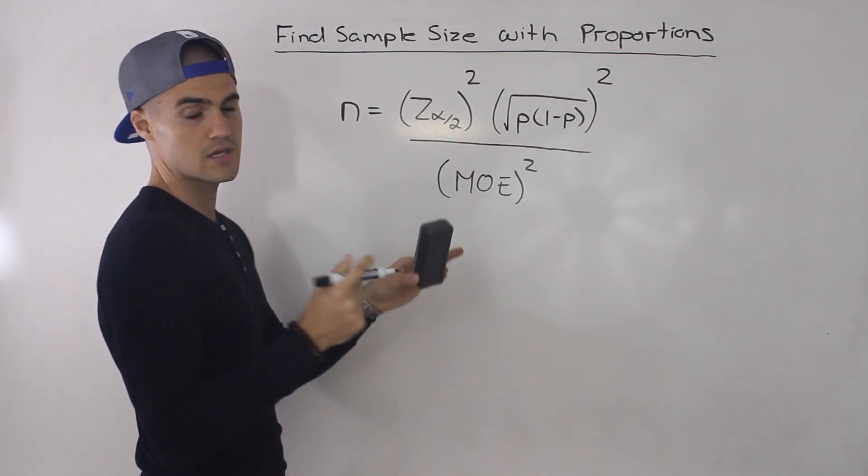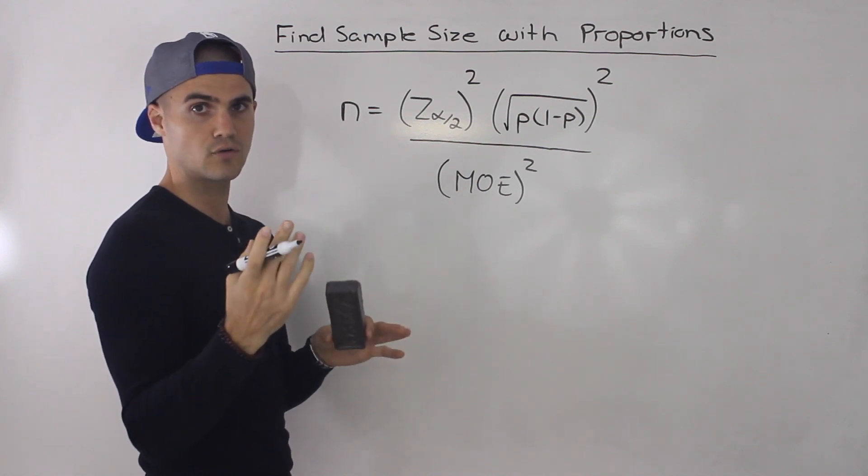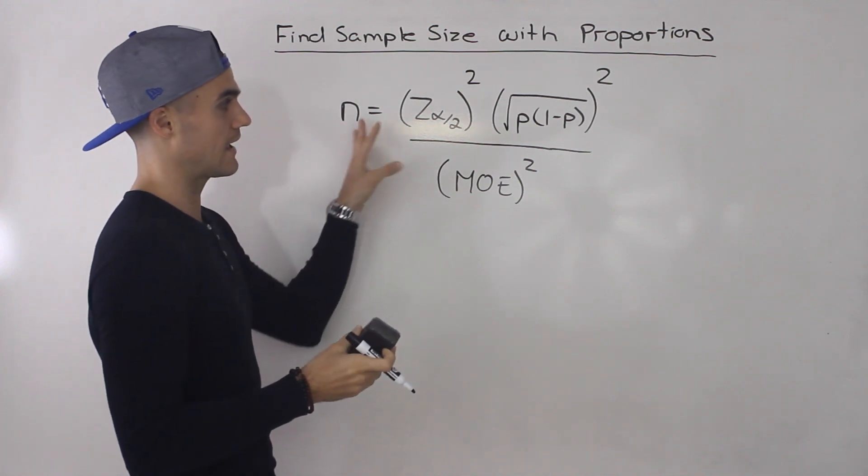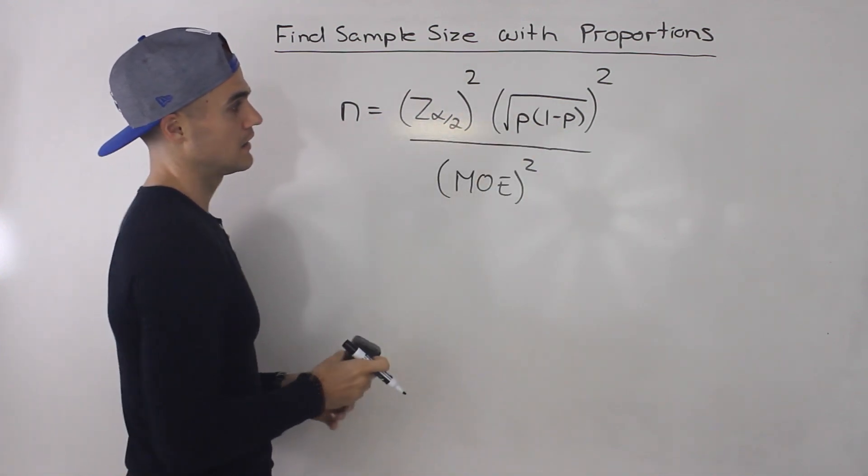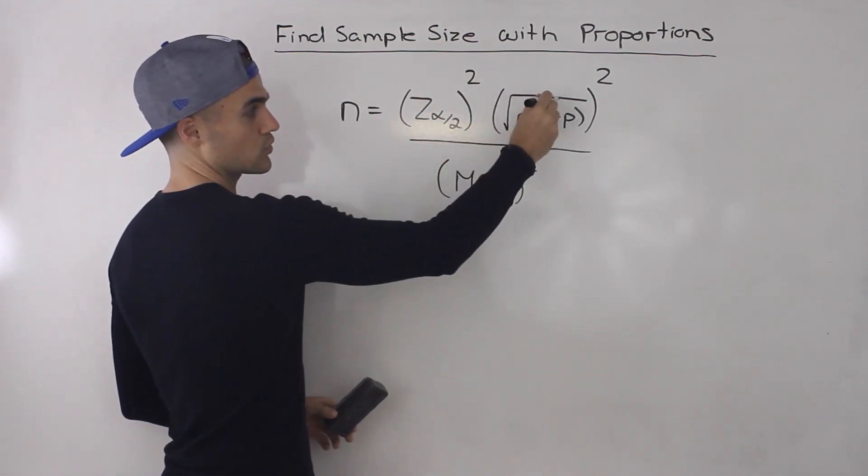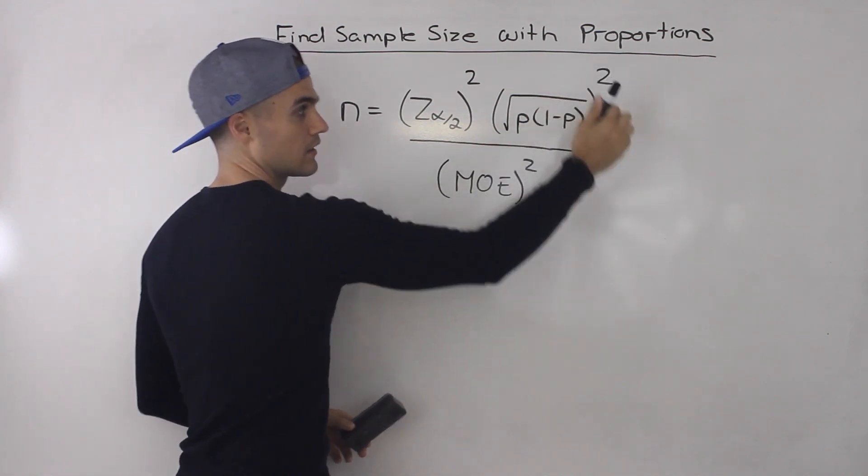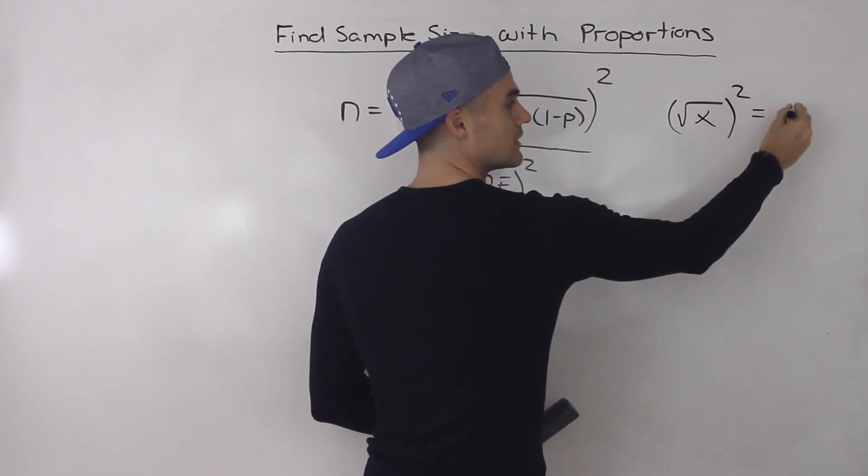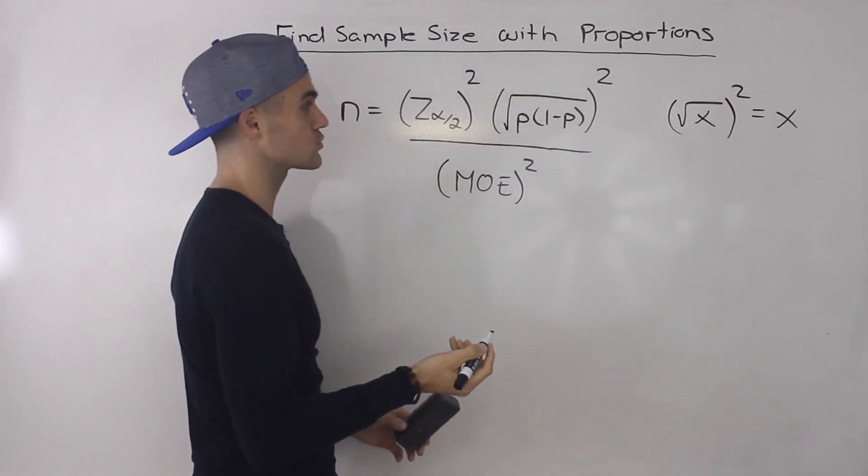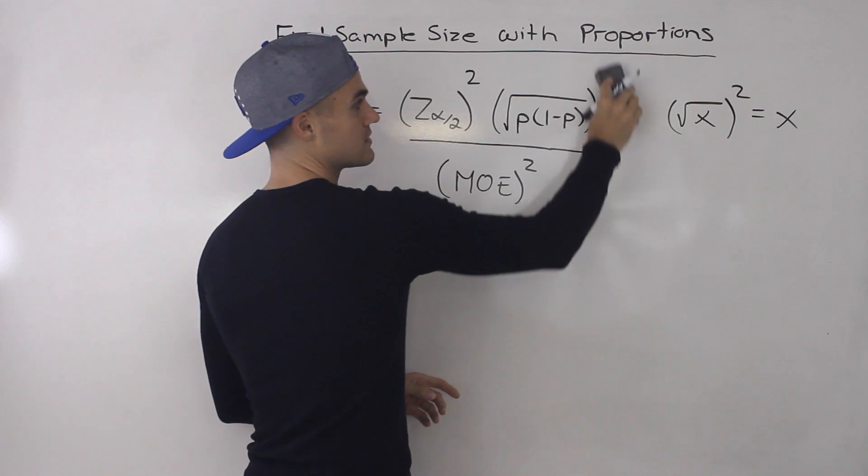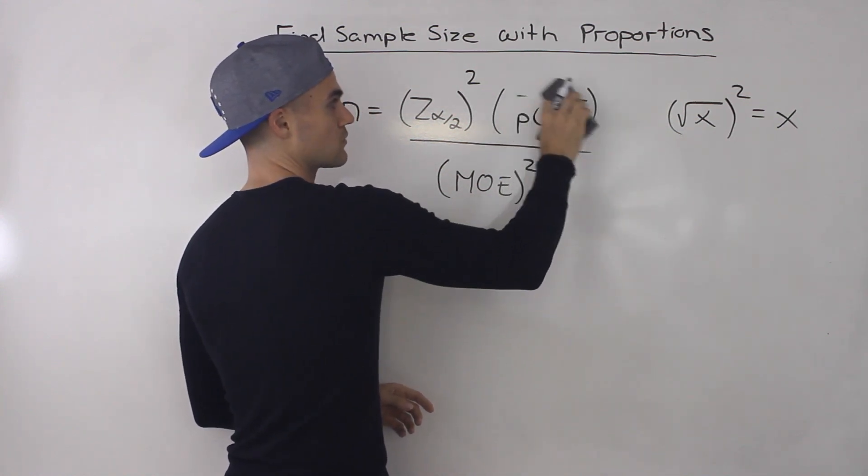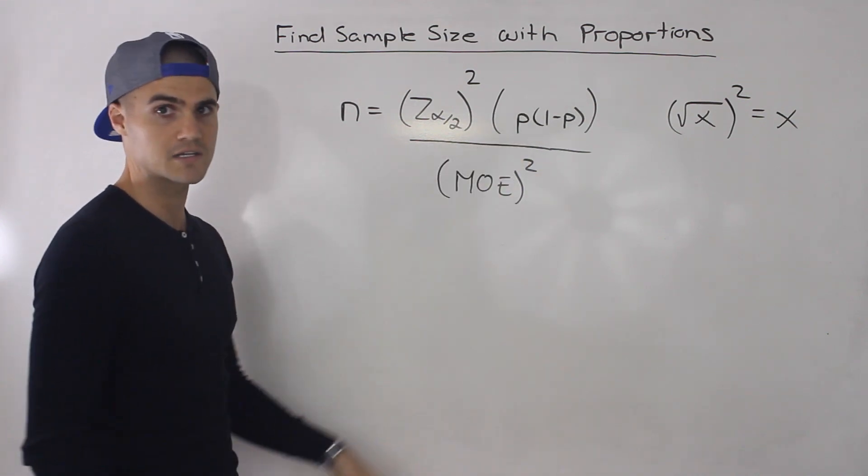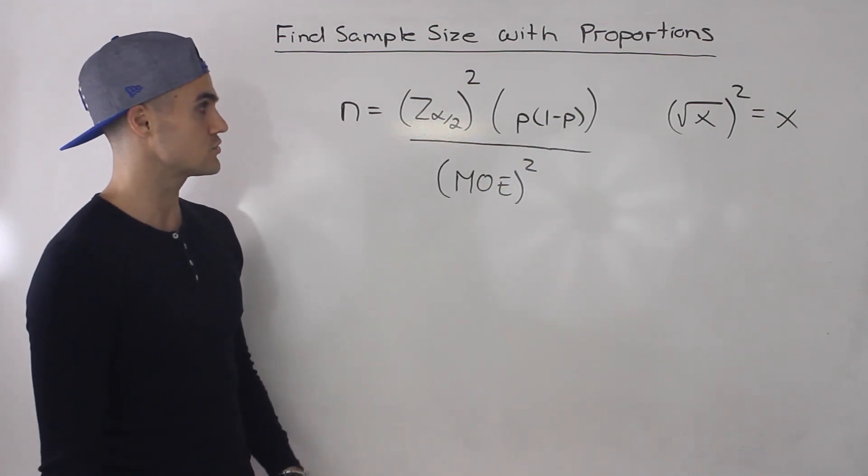Basically if you take the confidence interval for a proportion, just the general format that I went over, and you isolate for that n, this is what you would get here. And notice that we have a square root squared. Whenever you're taking something in a square root and then squaring it, it's just equal to whatever's inside that square root. So we could actually get rid of this squared here and get rid of this square root, and we would just be left with p times 1 minus p.